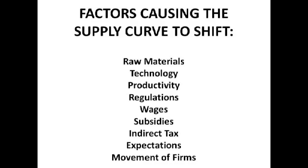As with the demand curve shifting, all of these factors have inverses. For example, I talked about regulations increasing, causing costs of production to increase. Well, if regulations fall, cost of production falls, so supply increases — that sort of thing applies to all the factors.